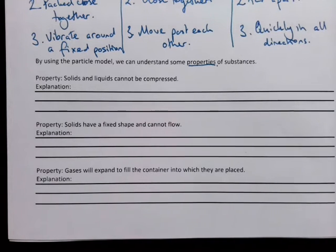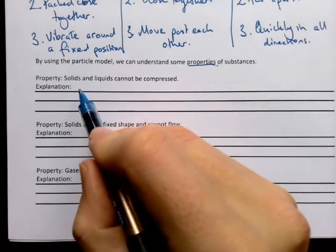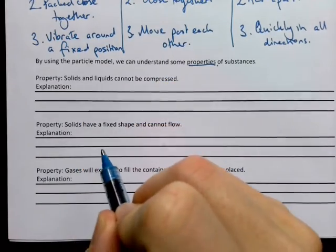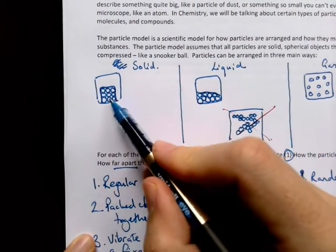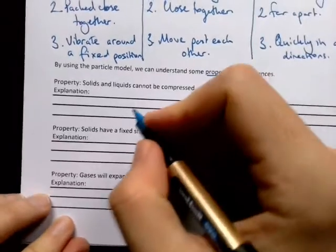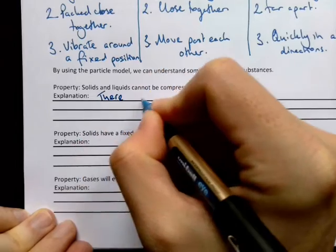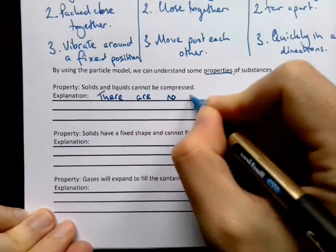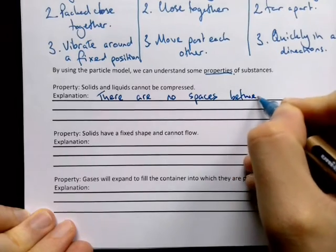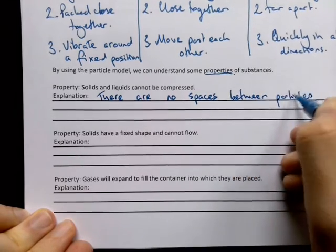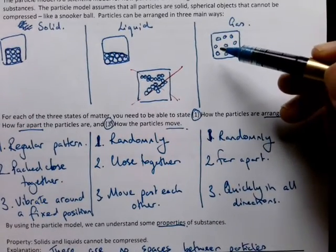Solids and liquids cannot be compressed. If you look at the picture for a solid and for a liquid, you can see that there are no spaces between the particles, and that is why they cannot be compressed. Gases, however, you can compress because there is additional space for the particles to move into.